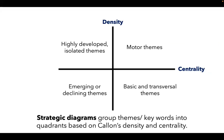To give you a better idea of what strategic diagrams are, they're used to group themes or keywords into quadrants based on Kalon's centrality as well as Kalon's density. Kalon's centrality refers to how central that theme might be — the amount of external links that one node or one theme has with other links. And density would refer to the amount of internal links that that one node would have with other clusters within its thematic network.